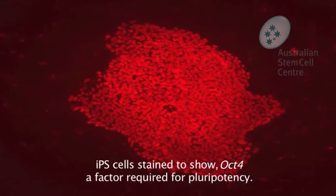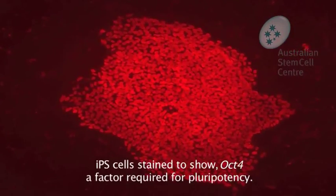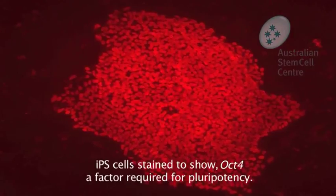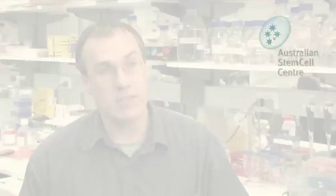Whether it's from somebody that's healthy, we can make an IPS cell control, or we could potentially make IPS cells from someone with a specific disease to allow us to set up models of that disease in a dish to study in the lab.